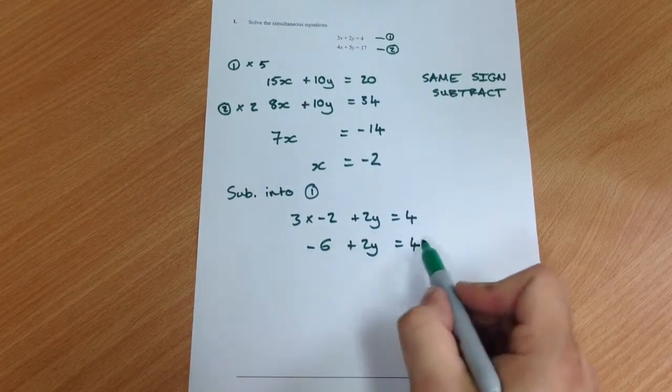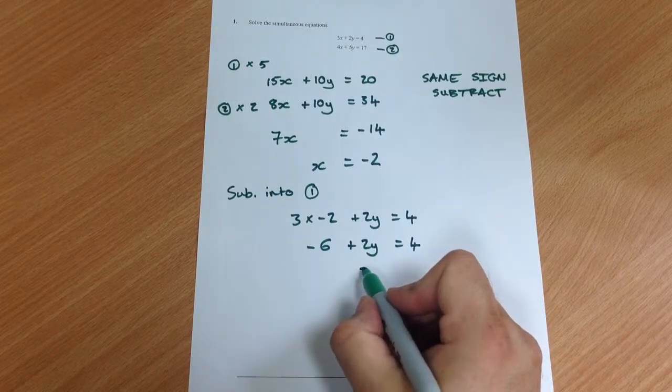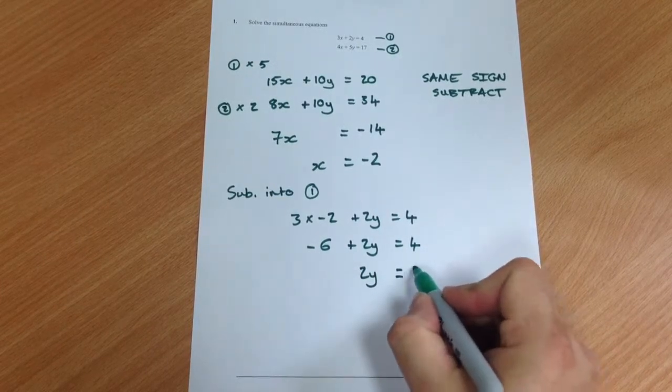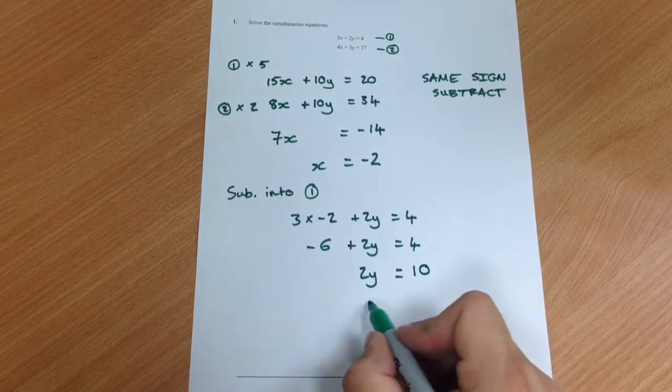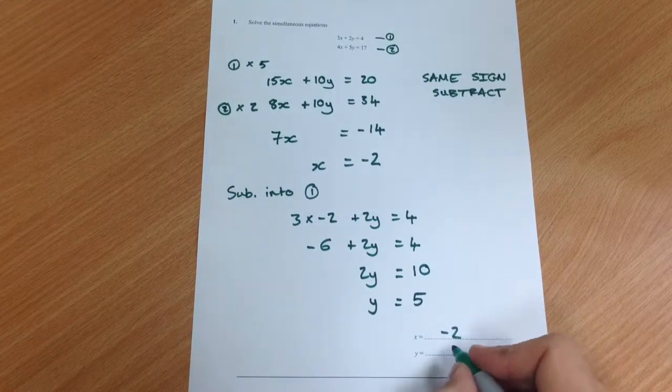Move that 6 over to the other side by adding on 6. You've then got 2y equals 10, which tells you y must equal 5.